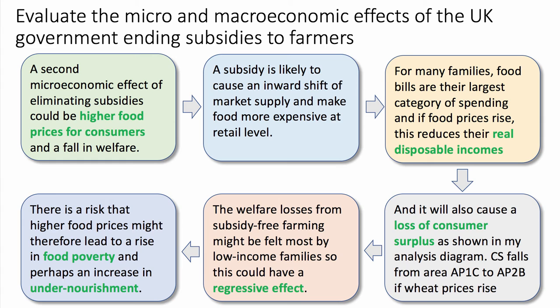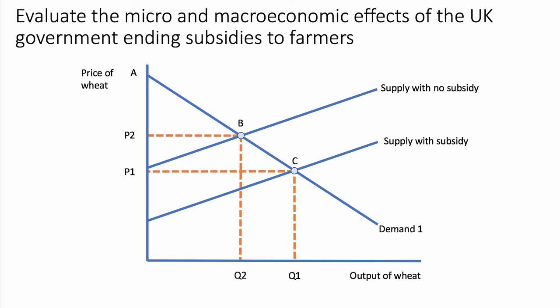The welfare losses from subsidy-free farming might be felt most by low-income families, so this could have a regressive effect, with a risk that higher food prices lead to an increase in food poverty and undernourishment. My analysis diagram shows supply with no subsidies versus supply with subsidies. In a world of no subsidy the market price is P2; consumer surplus falls from area A–P1–C to A–P2–B.